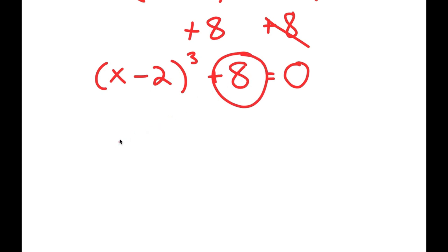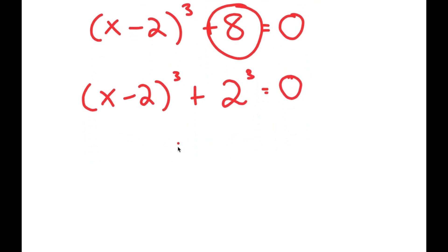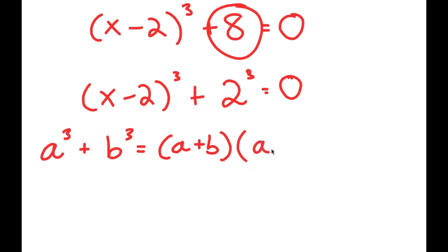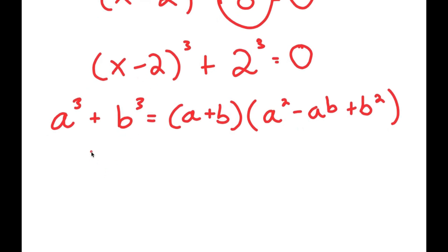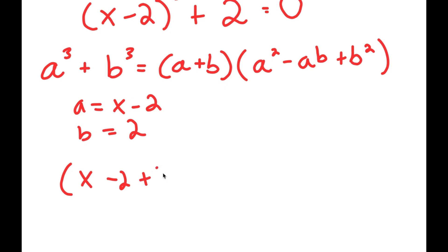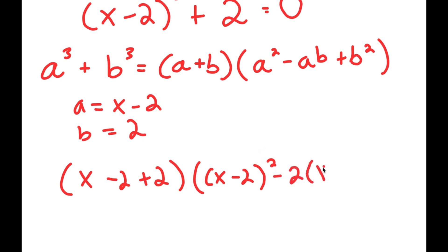From here, I can rewrite 8 as 2 to the power of 3. So I have x minus 2 to the power of 3 plus 2 to the power of 3 equals 0. The reason I did that is because if I have something in the form a cubed plus b cubed, this is equal to a plus b times a squared minus ab plus b squared. In this case, a is equal to x minus 2 and b is equal to 2. So I get x minus 2 plus 2, times x minus 2 squared minus 2 times x minus 2 plus 2 squared, and this is equal to 0.